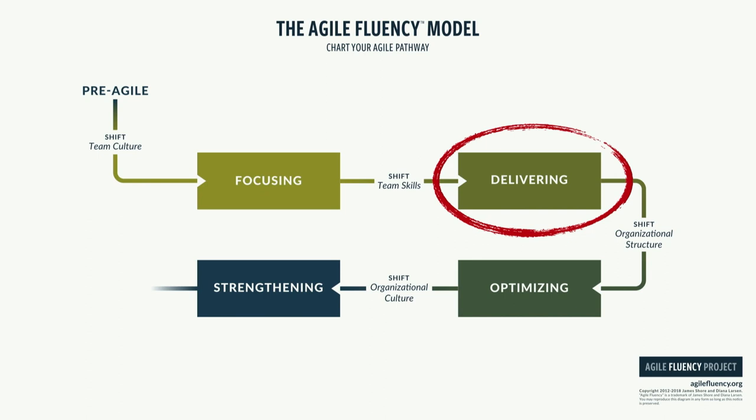Back in the 90s, when I first got started with software development, testing was the job of the QA department. We had this idea of the validation V. So we'd create the requirement specification, hand it off to the testing department. They would create a test plan and then much, much later, they would run that test plan. We'd create a design document, there would be a design test plan, and so forth. Testing was largely manual. There were test scripts, but they were created by test leads for armies of testers to run through manually over and over again.